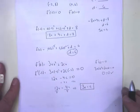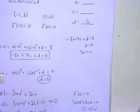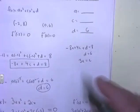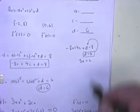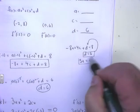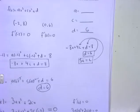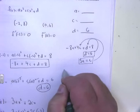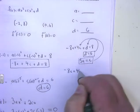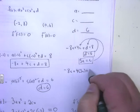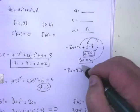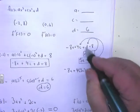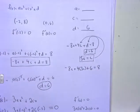I've got three pieces of the puzzle: -8a + 4c + d = 8, d = 6, and 3a = c. From this, I can solve for a, c, and d. I have d already. By substitution — replacing c with 3a and d with 6 — I get: -8a + 4(3a) + 6 = 8, which simplifies to -8a + 12a + 6 = 8, then 4a = 2, so a = 1/2.